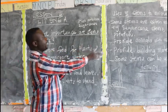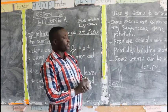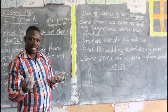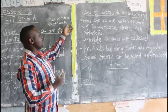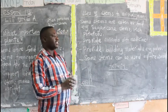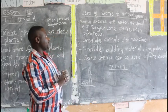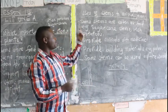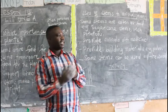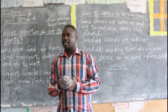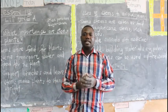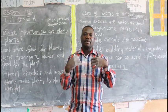Having looked at the importance of stems to plants, we now look at the importance of stems to animals or to man. Be very attentive. Some stems are eaten as food — we eat sugarcane stems, we eat Irish potato stems, and many others.